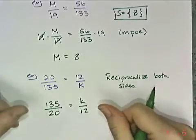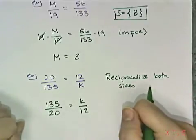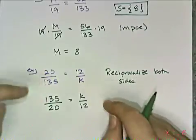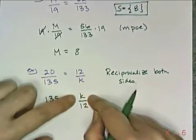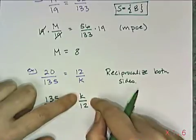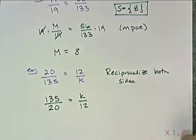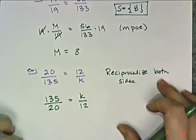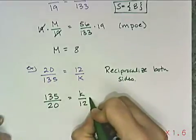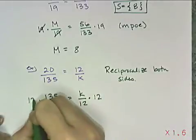I've inverted or flipped both of the fractions in the proportion. And now I have the variable where I want it, which is in the numerator. And so now what I'm going to do is I'm going to solve this like it were just a one-step equation. So the unknown has been divided by 12. So my job is to multiply both sides by 12.